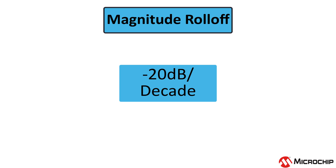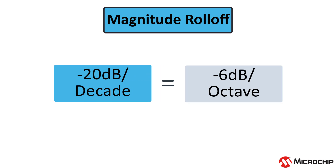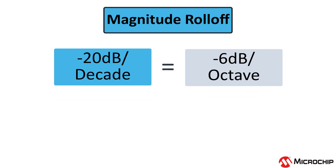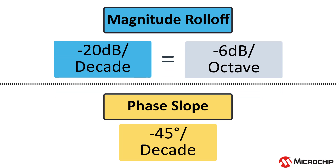Let's talk about what it means to have a minus 20 dB per decade or minus 6 dB per octave roll off and where it comes from. Let's also talk about the phase response of a filter and how we get the minus 45 degrees per decade estimation.